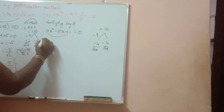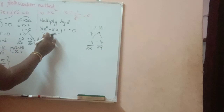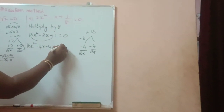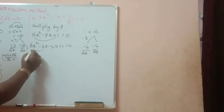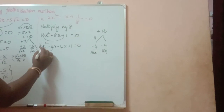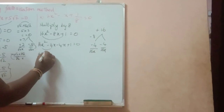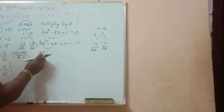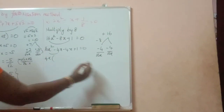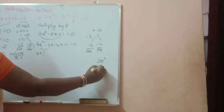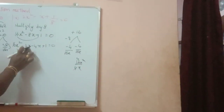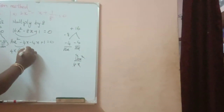Like this, we can write — otherwise one more method I told. 16x square minus 8x, you can write as minus 4x minus 4x plus 1 equal to 0. These two terms: common term among the numbers. 16 and 4: both are divisible by 4. x square and x, so x is a common term. Whenever you are taking the common term, divide each term by the common term. 16x square by 4x.